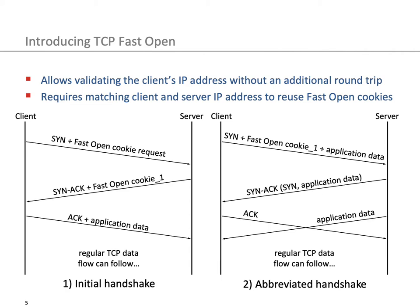The fast open cookie received from the server is cached within the TCP cache. The client will reuse this cached fast open cookie if, during a future connection attempt, the client and server IP address matches the one of the previous TCP fast open connection. Then, during the abbreviated handshake, the client sends a SYN along with the fast open cookie retrieved from the cache and sends application data. The server responds with a SYN-ACK and the client sends an ACK. In total, this saves one round trip time compared to the initial handshake.